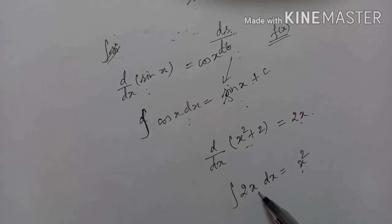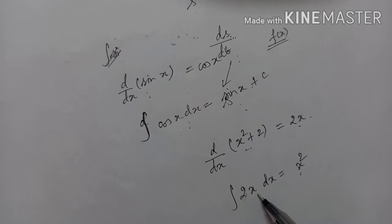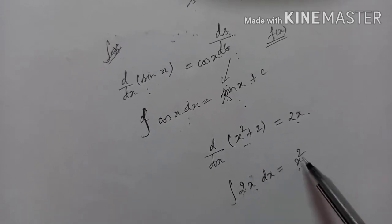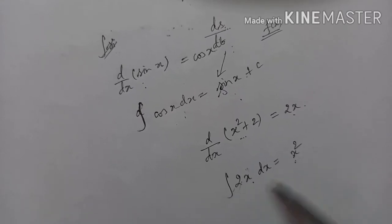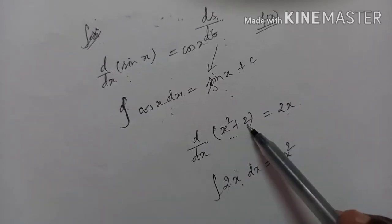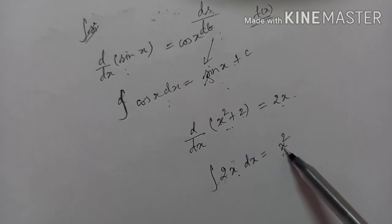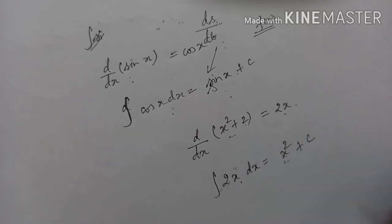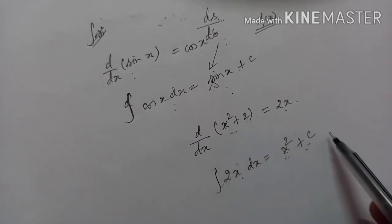I hope you know the formula: the integral of x to the power n dx is x to the power n plus 1 by n plus 1. Here n is 1, so x squared by 2, and the 2 gets cancelled, giving simply x squared. You can see that differentiating x squared plus 2 gives 2x, but integrating 2x gives only x squared. So we add the constant of integration C, where this 2 is considered as C.